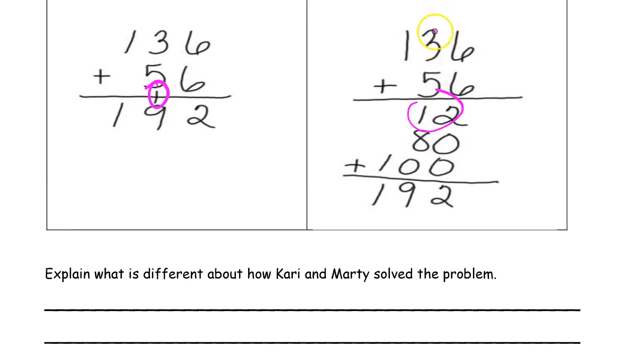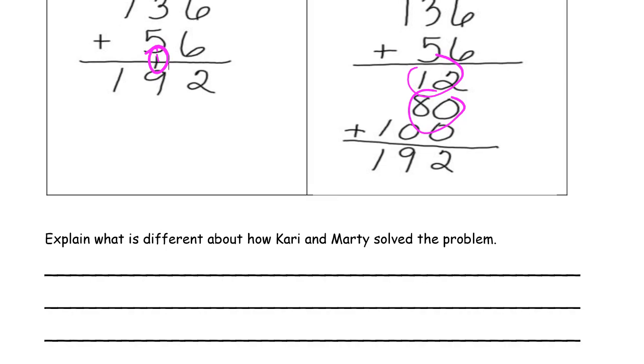Because they're both adding 30 and 50 to get 80. Except Marty's writing it as 80 instead of adding the 1 and the 8. They're adding different numbers, but they're getting the same totals.